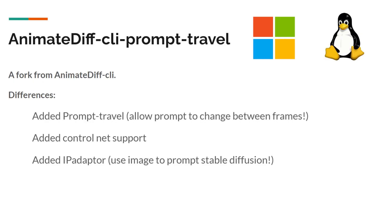Hello everyone, welcome to my channel. In this video I will do a demo and a tutorial on how to run AnimateDiff Prompt Travel locally on Windows and also on Linux. I have Windows 10 installed and I actually use two machines, so they both work. I had a lot of trouble installing it on Windows but eventually I was able to do it, so I'm showing you how to do that today. The commands also work for Linux.